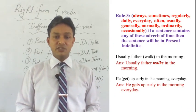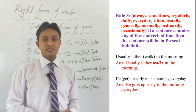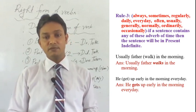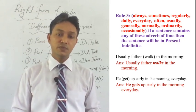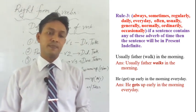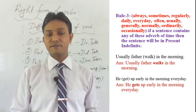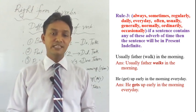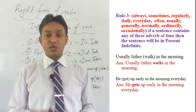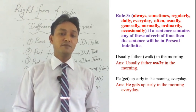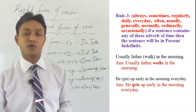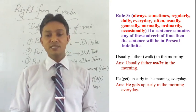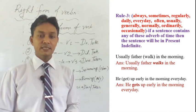Rule number three: there are some adverbs of time that denote the present, like always, sometimes, regularly, daily, every day, often, usually, generally, normally, ordinarily, actually. If we find any of these adverbs in a sentence, we write the sentence in present indefinite tense. For example, 'usually father walks in the morning' and 'he gets up early in the morning every day'.